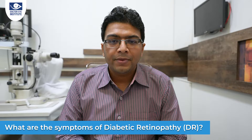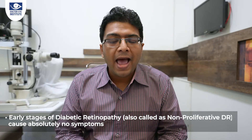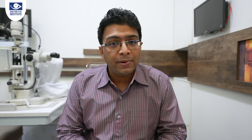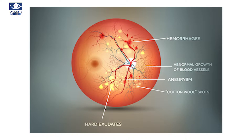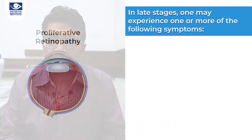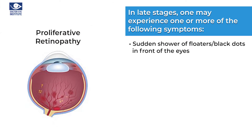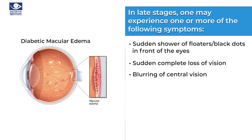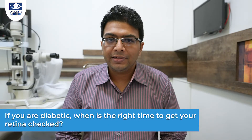So what are the symptoms of diabetic retinopathy? Early stages of diabetic retinopathy may cause absolutely no symptoms, though examination of the retina even at this stage may show several changes such as blood spots or red dots on the retina, cholesterol deposits or yellow dots, or even cotton wool spots — whitish patches which represent areas of decreased blood supply. But at this stage, the location and severity of these changes is not enough to cause any visual symptoms, and therefore the patient is blissfully unaware. In the late stages, however, one may experience a sudden shower of floaters or black dots, a sudden complete loss of vision, blurring of central vision, or distortion of objects.